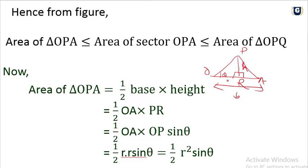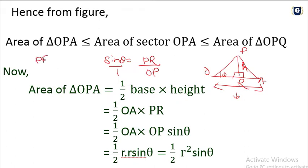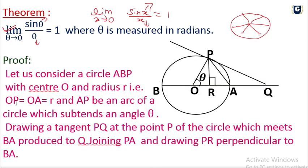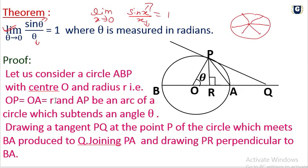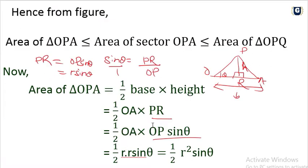Area of triangle OPA equals one half times OA times PR. Sin theta equals PR by OP, so PR equals OP times sin theta. Since OP equals OA equals R, PR equals R sin theta. So area of triangle OPA equals one half times R times R sin theta equals one half R squared sin theta.